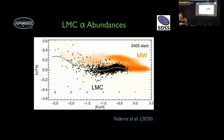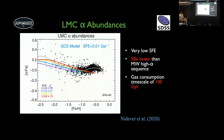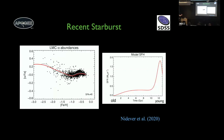Here are the LMC abundances: the Milky Way is in orange in the background, and the LMC in black on top — you can see it looks very different from the Milky Way. You can see the alpha knee at the metal-poor end. Comparing chemical evolution models, we found the star formation rate was about 50 times lower in the LMC than the Milky Way. The very metal-rich part required adding a burst in the star formation history — the red line matches it well. That starburst created massive stars producing alpha elements and pushed metallicities up.